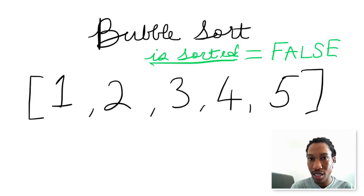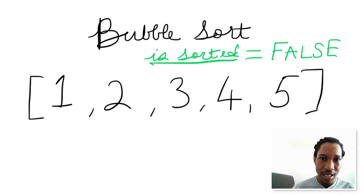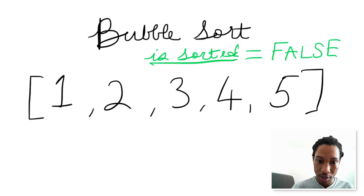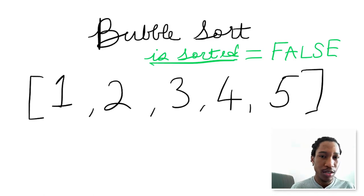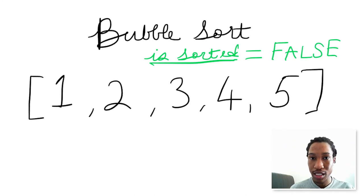So bubble sort is not that optimal, as you've seen, because we keep going through the array, looping through and swapping elements until we're sure the array is sorted. Even when the array is sorted, we have to go through one final pass to actually make sure. More optimal sorting algorithms would be insertion sort, selection sort, and others — and we're going to do those later. But for now, let's dive into the code for bubble sort.